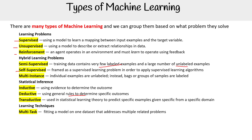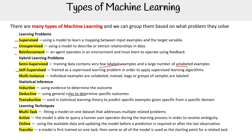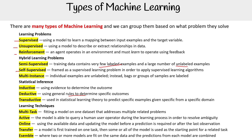For learning techniques, we have multitask, active, online, transfer, and ensemble. Multitask is fitting a model on one dataset that addresses multiple related problems. Active is where the model is able to query a human operator during the learning process. Online uses available data and updates the model before a prediction is made — kind of sounds like RAG when talking about generative AI. Transfer is where a model is first trained on one task and then some or all of the model is used as a starting point for related tasks. Ensemble is where two or more models are fit on the same data and the predictions from each model are combined.